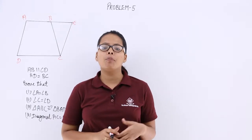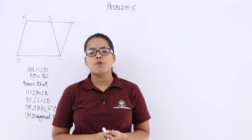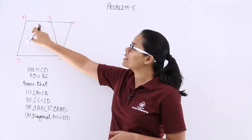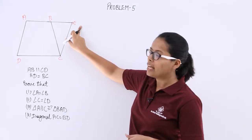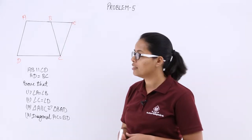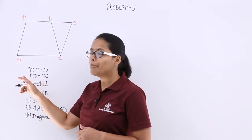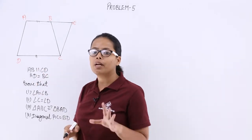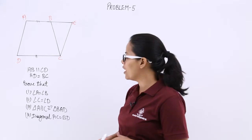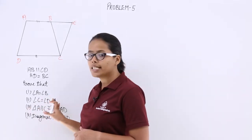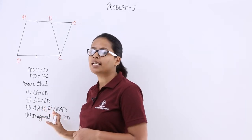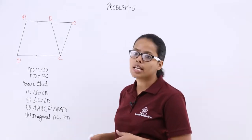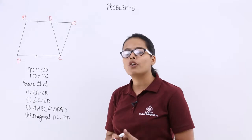Hello guys, let's start with another problem, problem number 5. So let's see what this problem says. I have drawn ABCD which is a trapezium, and I have extended branch BA till point E, then these two branches CE has been met. It has been given that AB is parallel to CD. These two branches are not equal but they are parallel. You need to prove that angle A equals angle B, angle C equals angle D, triangle ABC is congruent to triangle BAD, and that diagonal AC equals BD.